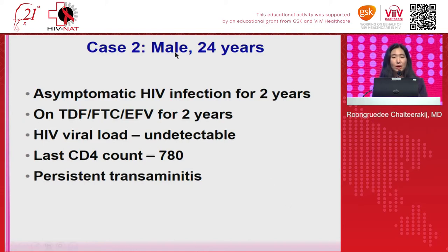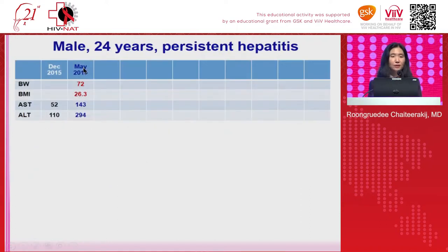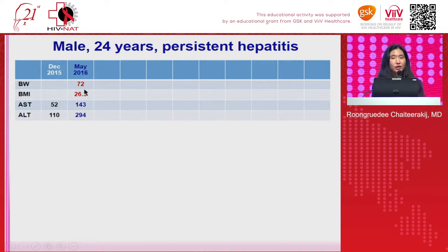Moving on to the second case: a 24-year-old male patient diagnosed with HIV infection for two years, receiving ARV with undetectable viral load and good CD4 count. He was referred for persistent transaminitis. At the first liver clinic visit, he had ALT elevation of almost 300 — almost 10 times above normal. He also had a BMI of 26, and he told me that during the past year he gained 15 kilos — very fast weight gain. We thought the ALT elevation might come from fatty liver.